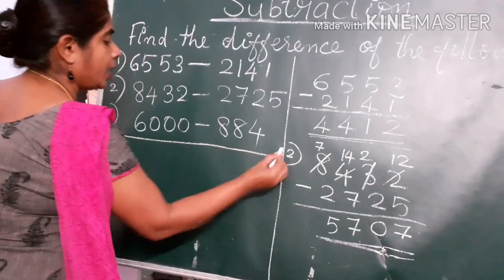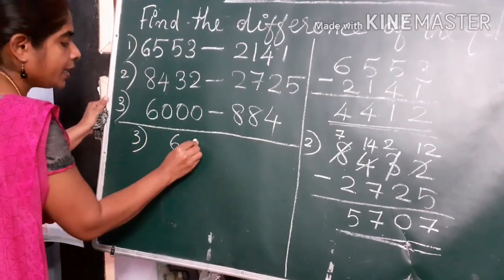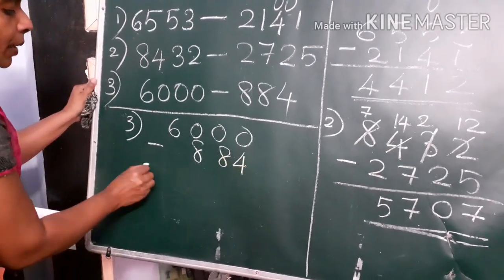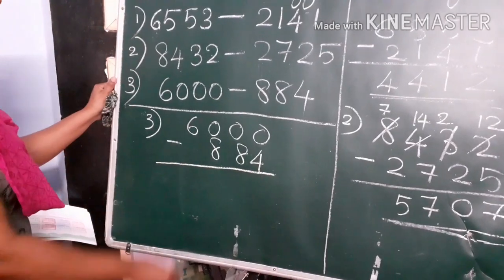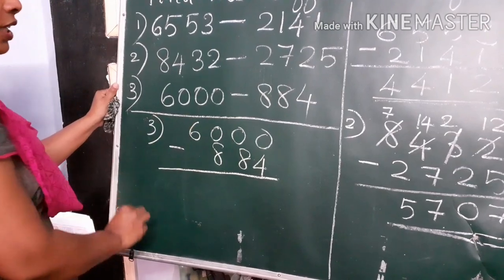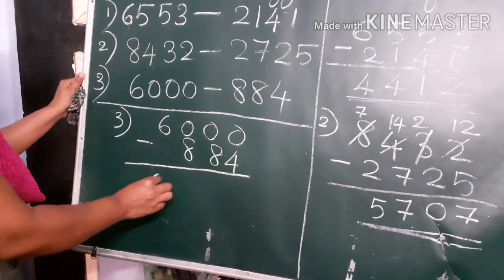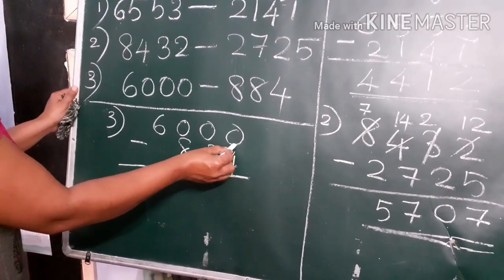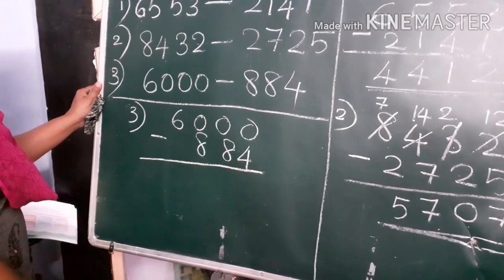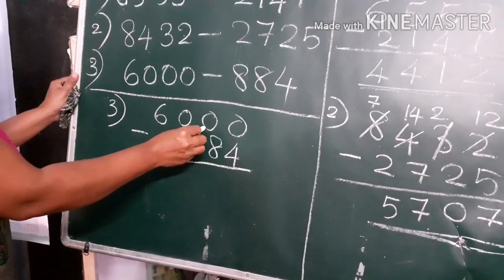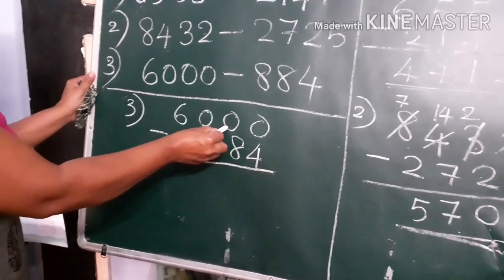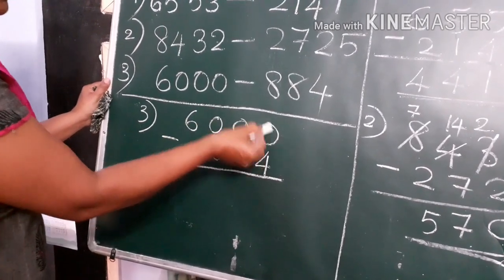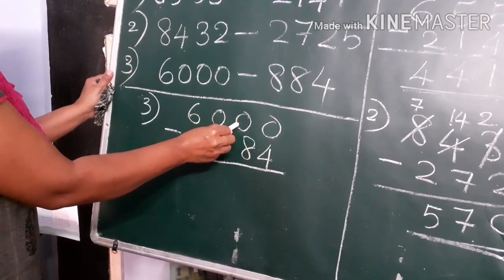Now the third question: 6,000 minus 884. Be careful when you write the number — arrange according to place value. The first number is a 4-digit number and the second is a 3-digit number only. Here, 0 is smaller than 4, so we borrow from the next place. But the next place is also 0. The tens place can borrow from the hundreds place, but the ones place can't borrow from the hundreds place — nearest place only can borrow.